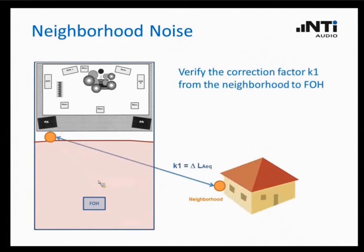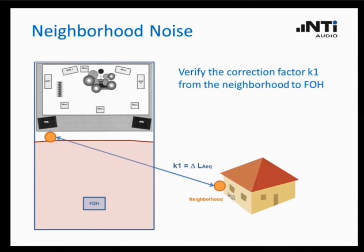It could also be that you are responsible for making sure the neighbors are not bothered too much by the music level from the concert. In that case, you do the same measurement with the microphone at your measurement position and again at the window of the neighboring building, giving you a second K1 factor. This allows you to monitor during the concert the sound level at the neighbor's window and ensure it complies with legislation.